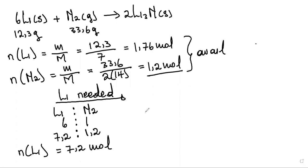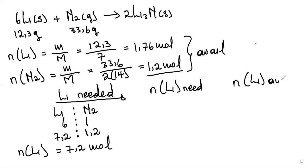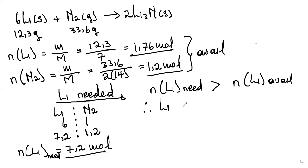Now we compare the moles of lithium needed versus the moles available at the start. We need 7.2 moles of lithium, but we only have 1.76 moles. Since the moles needed are greater than the moles available, lithium is the limiting reagent.